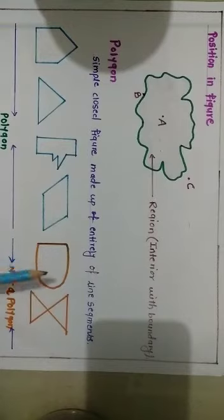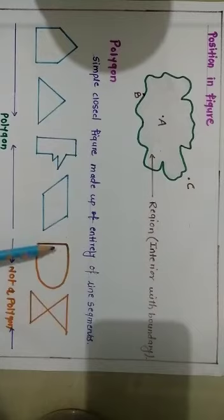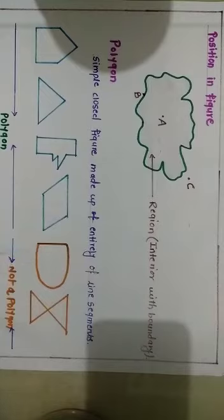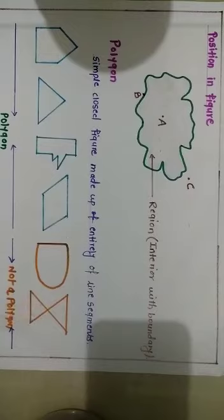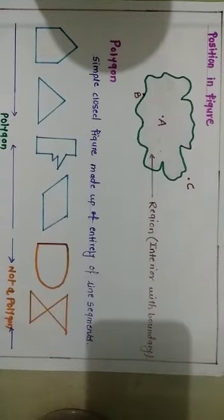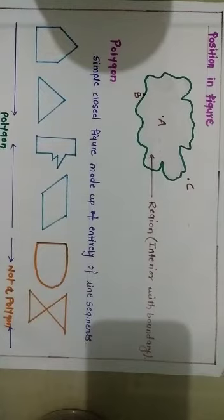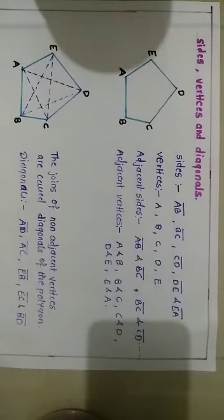But what about these two figures — are they polygons? No. The first figure is simple and closed but not made up entirely of line segments. One side is a line segment but another is a curve, so we cannot say that it is a polygon. What about the second figure? Even though it is made up of line segments and is closed, we cannot say it is a polygon because it is not a simple curve. A curve which does not cross itself is called a simple curve, but this figure crosses itself, so it is not simple, and that is the reason this figure is not a polygon.